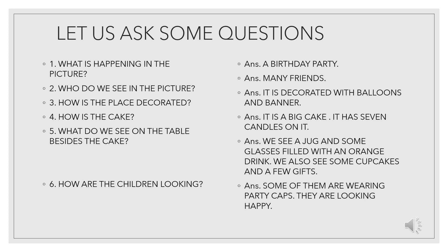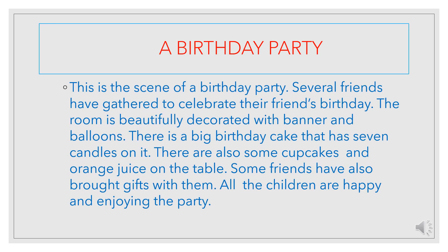In this way, first we have to ask some questions to ourselves after observing the picture and try to find out the answers. The answers that we find are to be noted somewhere in the rough page so that we can frame a paragraph based on the sentences. After noting down the answers to all the questions that come to our mind after seeing the picture, we will start to write the composition. The first thing to write in the composition is the title. We have to give a suitable title to any composition that we write, and the title should match what's happening in the picture. Since this is the scene of a birthday party, the title that we will give to this composition is A Birthday Party.